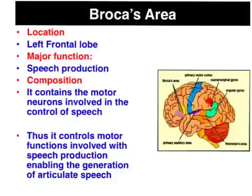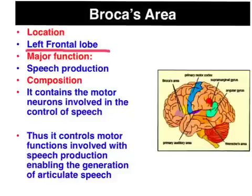For 95% of the population, Broca's area is located in the left frontal lobe just near the motor cortex, and its major function is speech production via activation of the motor neurons involved in the control of speech.